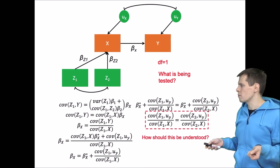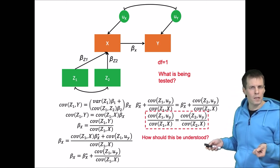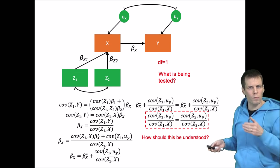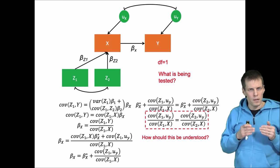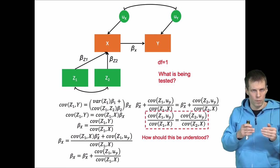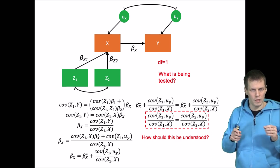So how should this equation be understood? We have the covariance between instrument and error term divided by covariance between instrument and the endogenous variable. And those two ratios should be the same.